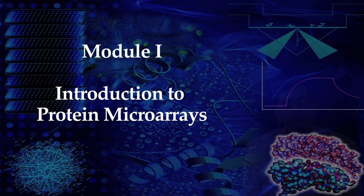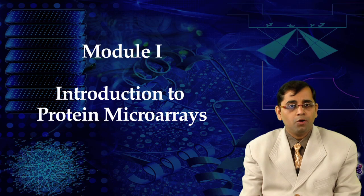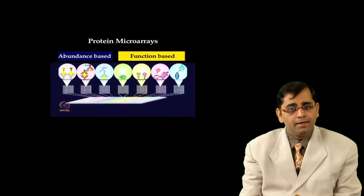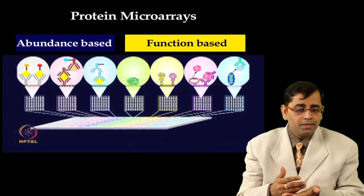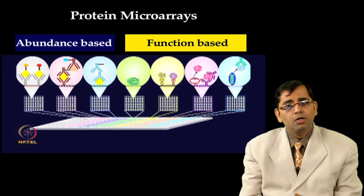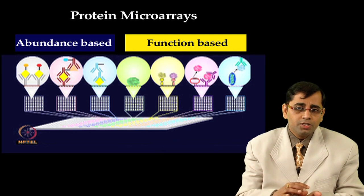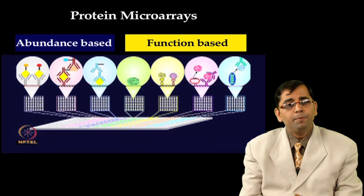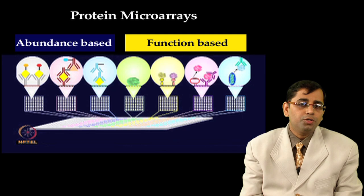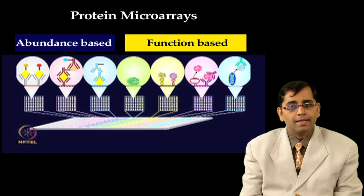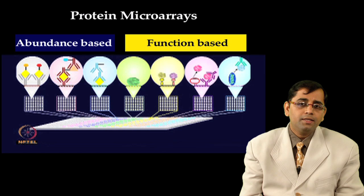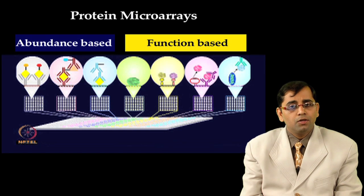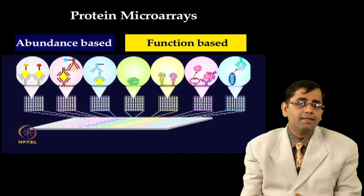Protein microarrays are a high-throughput platform for performing multifunctional assays. Arrays are comprised of immobilized proteins, peptides, nucleic acids, or cell lysates on the microarrays, so they can be probed with a query molecule, which could be a small molecule, ligands, recombinant proteins, peptides from biological specimens, or cell lysates.